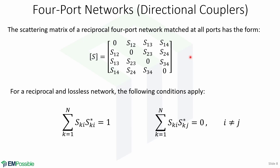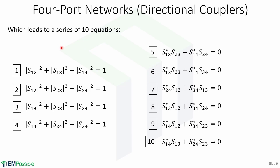Now let's look at four-port networks, which describe directional couplers. The scattering matrix of a reciprocal four-port network matched at all ports has this form. For a reciprocal and lossless network, the following conditions also apply: the summation from k equals 1 to n of Ski times the conjugate of Skj equals 1, and equals 0 for i not equal to j. These conditions lead to a series of 10 equations shown here.